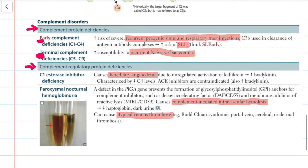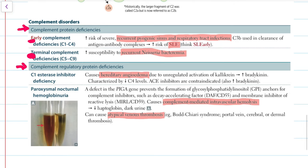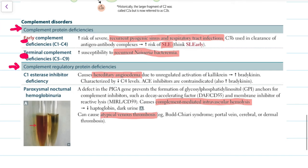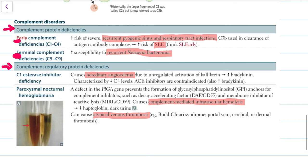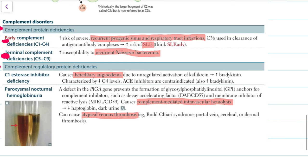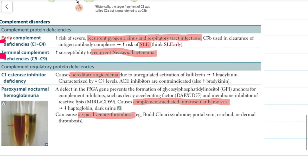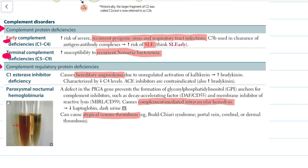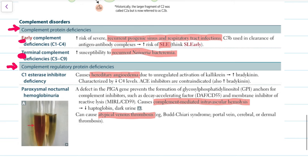The next one is paroxysmal nocturnal hemoglobinuria. It is a defect in the PIGA gene. PIGA gene prevents the formation of GPI, which anchors for the complement inhibitors such as decay accelerating factor and membrane inhibitor of reactive lysis. This causes complement-mediated intravascular hemolysis. These complements go and cause hemolysis inside the blood vessel, thereby decreasing the haptoglobin level and dark urine is observed. This can cause atypical venous thrombosis.